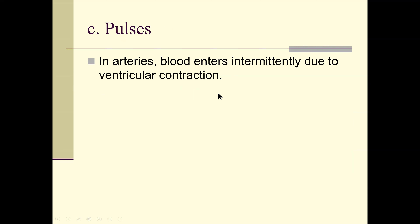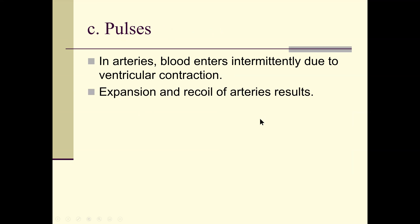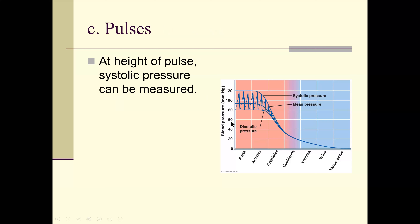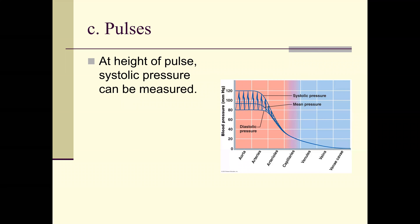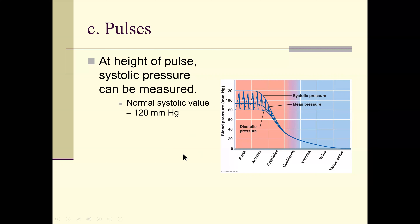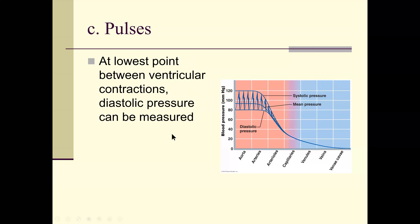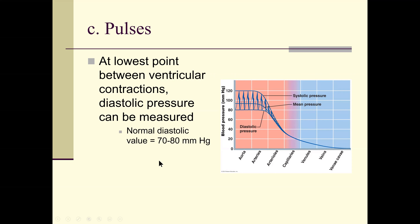Pulse: blood enters arteries intermittently due to ventricular contraction, causing expansion and recoil of the arteries. Systolic pressure can be measured with a blood pressure cuff — you can also check pulse at the temple, neck, or wrist. Normal systolic is 120. Diastolic pressure — normal is 70 to 80; you'd like it to be less than 85.